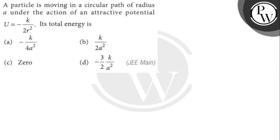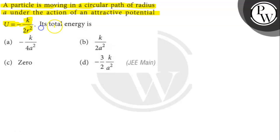Let's read the question. The question says: a particle is moving in a circular path of radius a under the action of an attractive potential U equals minus k by 2r square. So its total energy is how much? Let's find out.